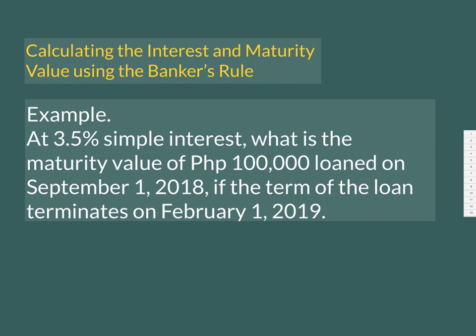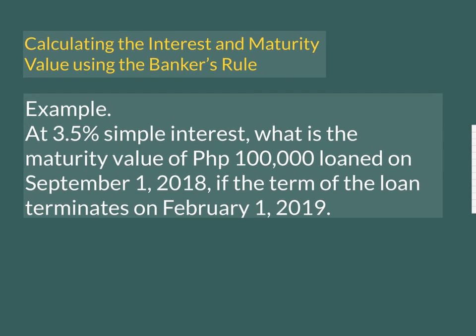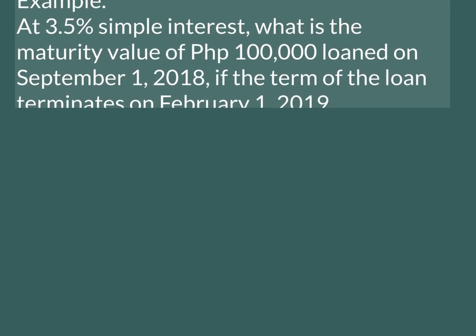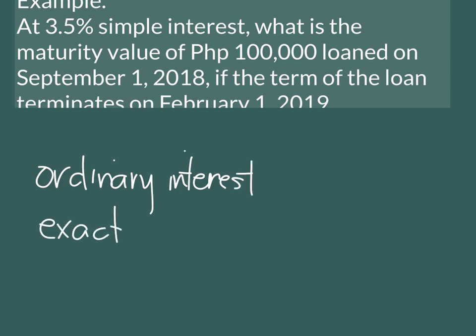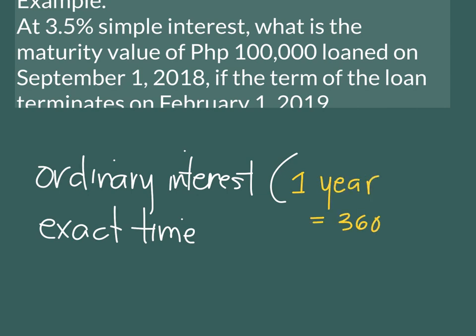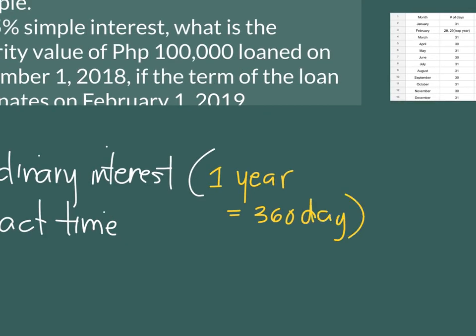In the banker's rule, you just have to take note of some conditions. When we say banker's rule, it means we take the simple interest using the ordinary interest and we use exact time. When we say ordinary interest, one year is equal to 360 days and not 365 days, so the interest will be computed based on a 360-day year. Every time you use the time or a fraction of the year, we use 360 days and not 365 days.